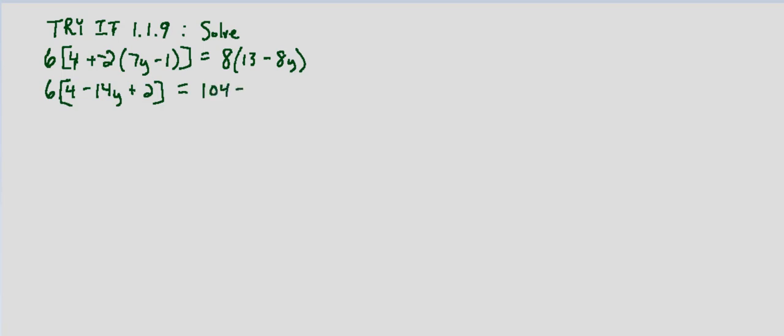Minus 8 times 8 is 64y. Now we'll go ahead and combine like terms on the left-hand side. We end up with 6 times negative 14y, and then 4 plus 2 is 6, so plus 6 equals 104 minus 64y.